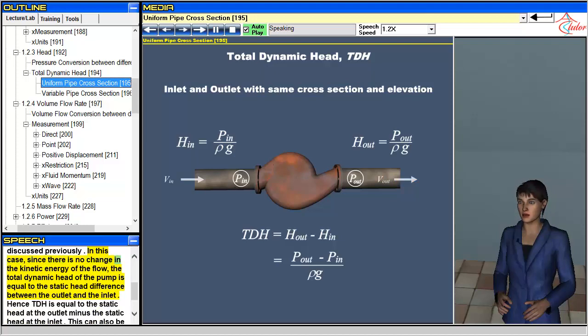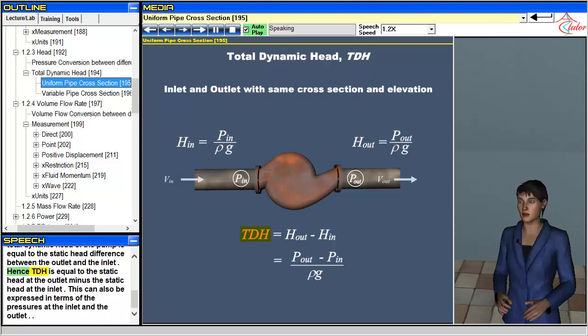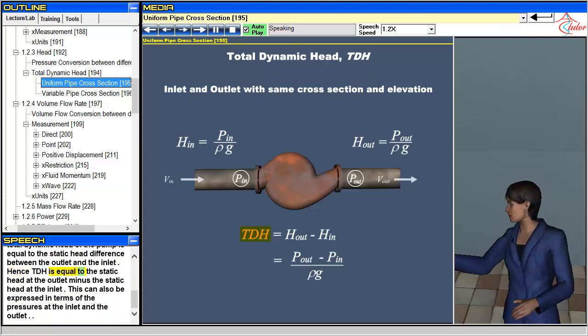In this case, since there is no change in the kinetic energy of the flow, the total dynamic head of the pump is equal to the static head difference between the outlet and the inlet. Hence TDH is equal to the static head at the outlet minus the static head at the inlet. This can also be expressed in terms of the pressures at the inlet and the outlet.